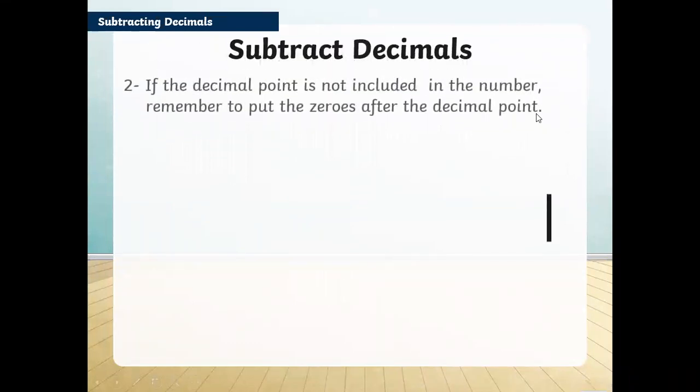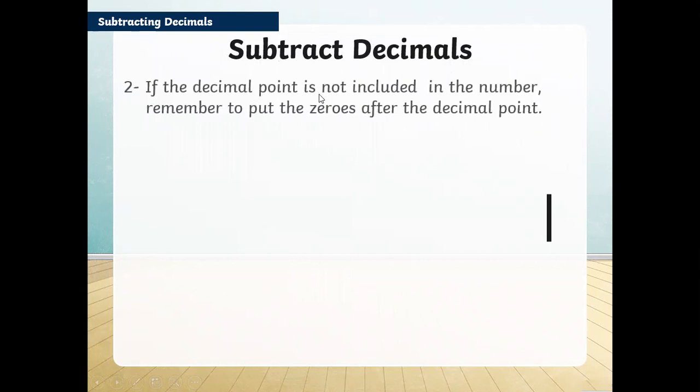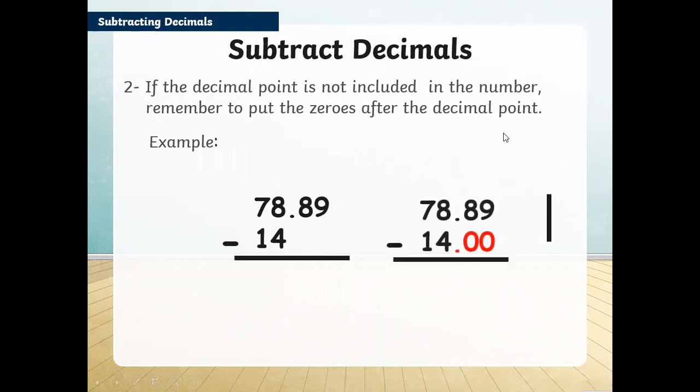Step number 2 in subtraction of decimals: if a decimal point is not included in the number, remember to put the zeros after the decimal point. For example, if subtracting these two amounts and 14 has no decimal points, we put the placeholder zeros. We should put as many zeros as the other number. If the other number has two decimal places, we add two zeros, then perform the subtraction.